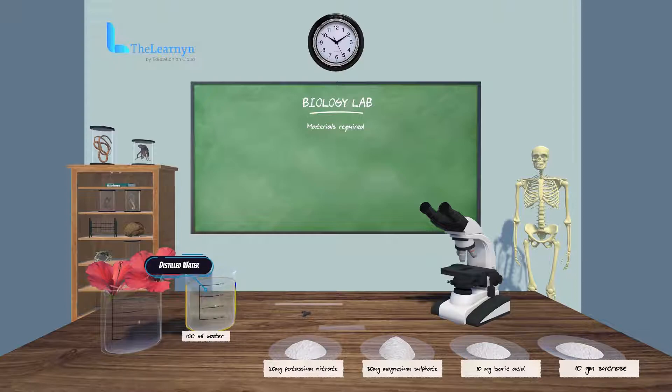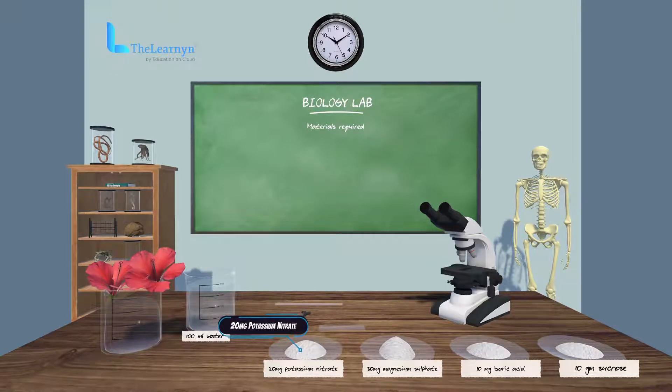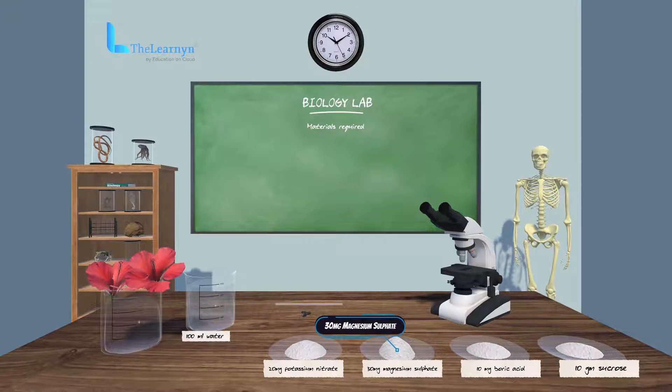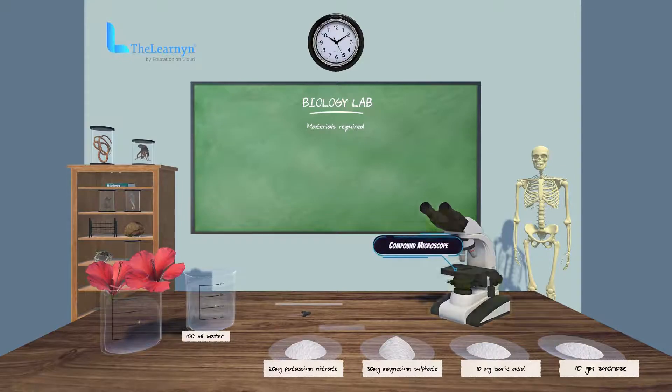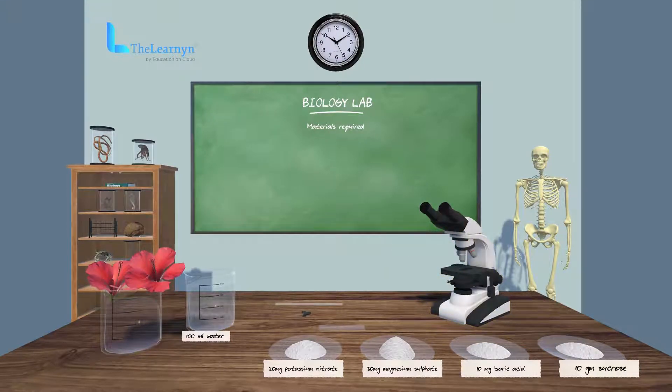20 milligrams potassium nitrate, 30 milligrams magnesium sulfate, 10 milligrams boric acid, 10 grams sucrose, and a compound microscope. Procedure: